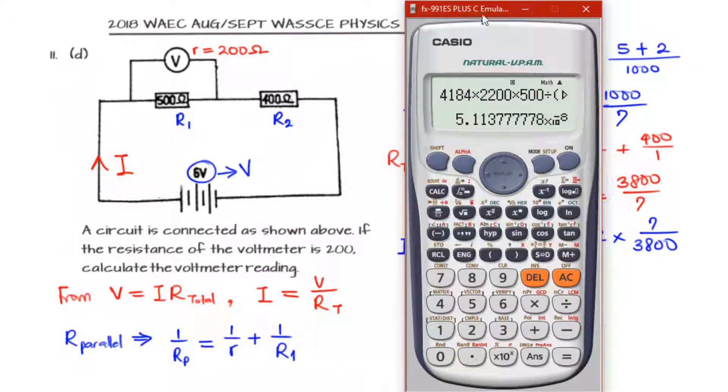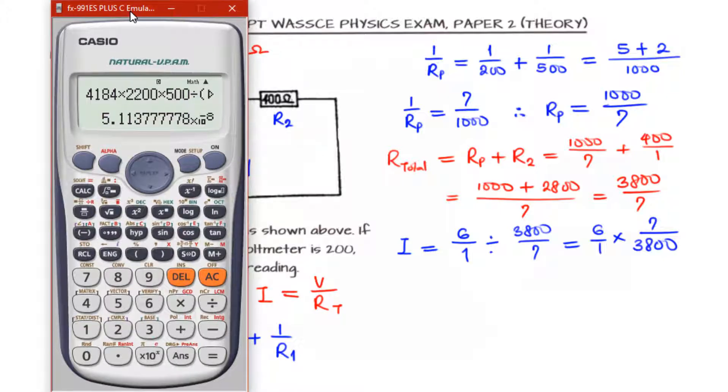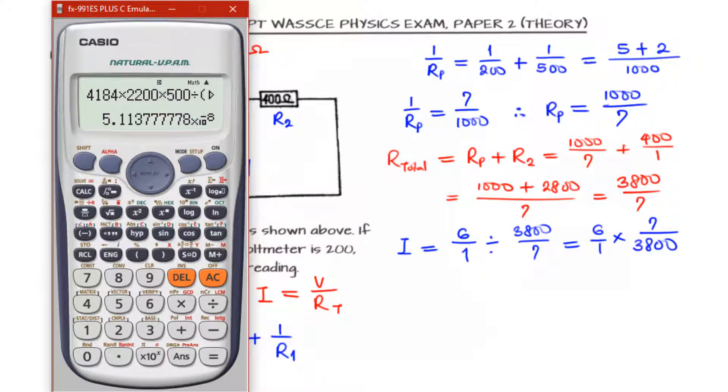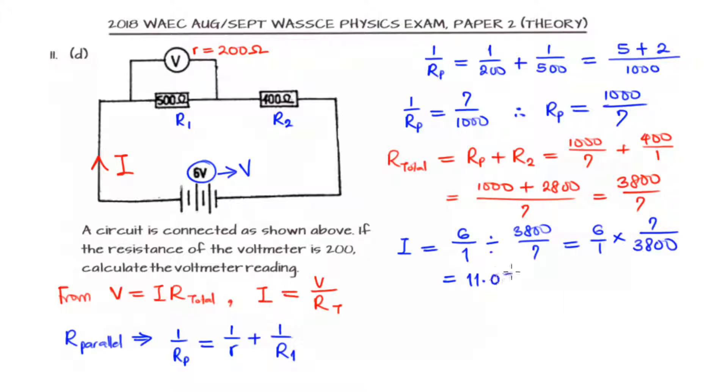So our calculator can help us to evaluate that. We will have this to be 6 times 7 divided by 3800. Let's put that in scientific notation. That's 11.05 exponent minus 3 ampere. So that's the value of the current flowing in the circuit.